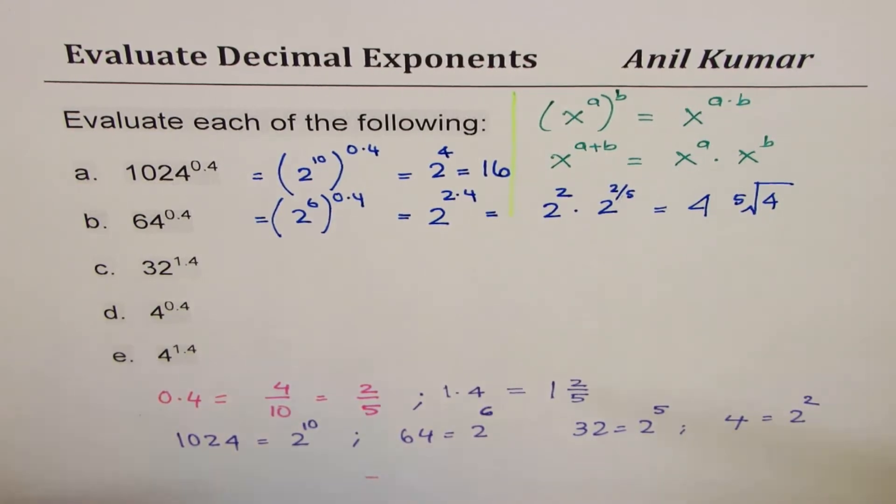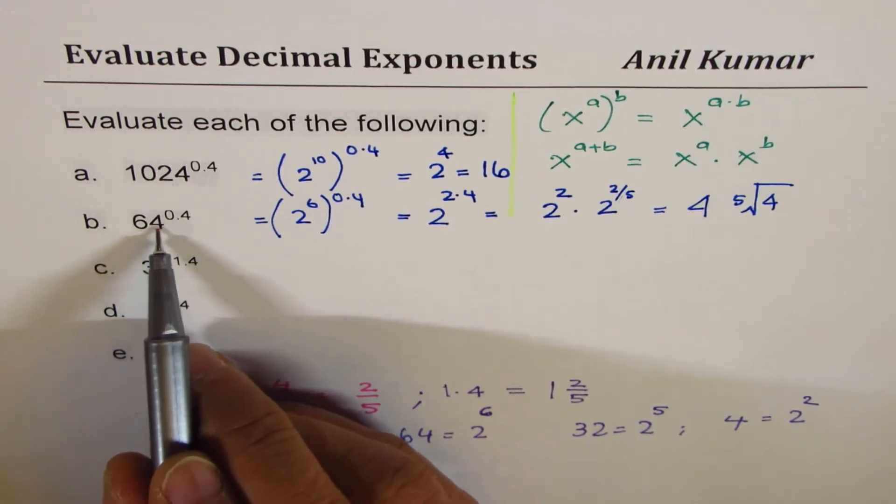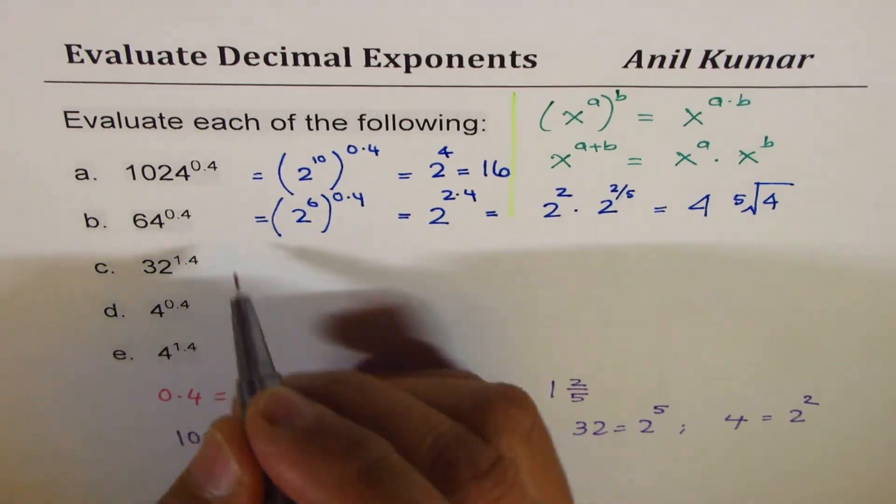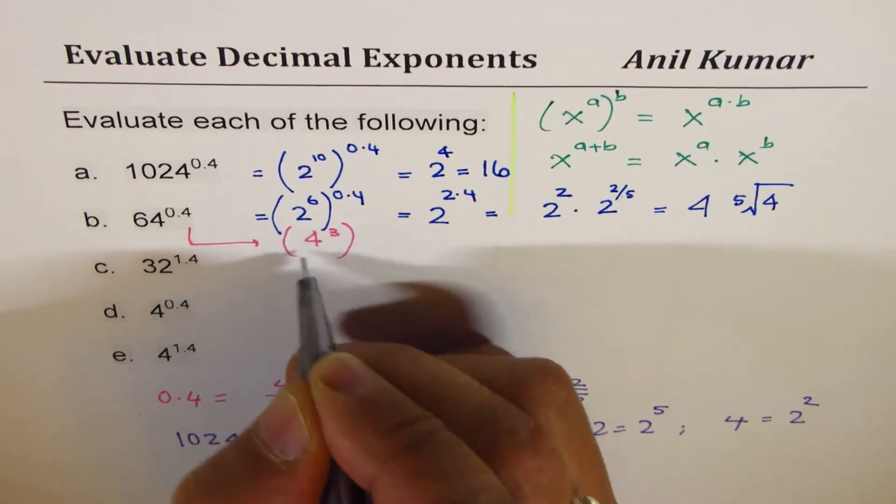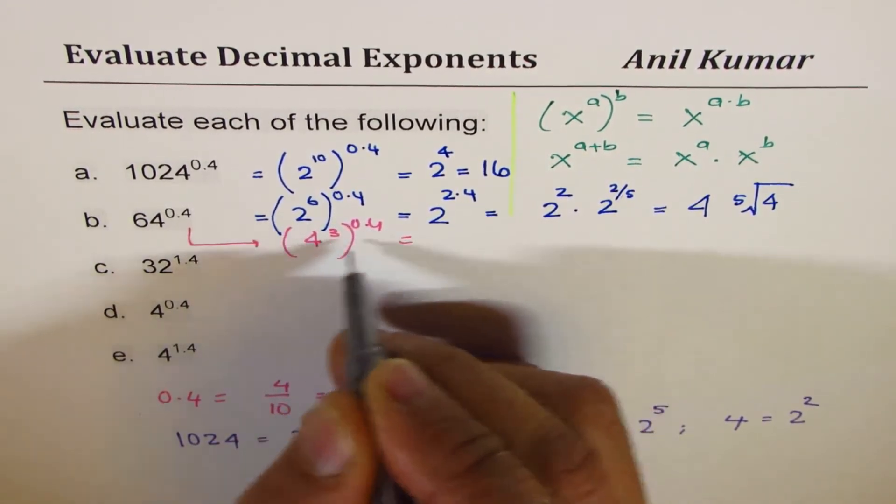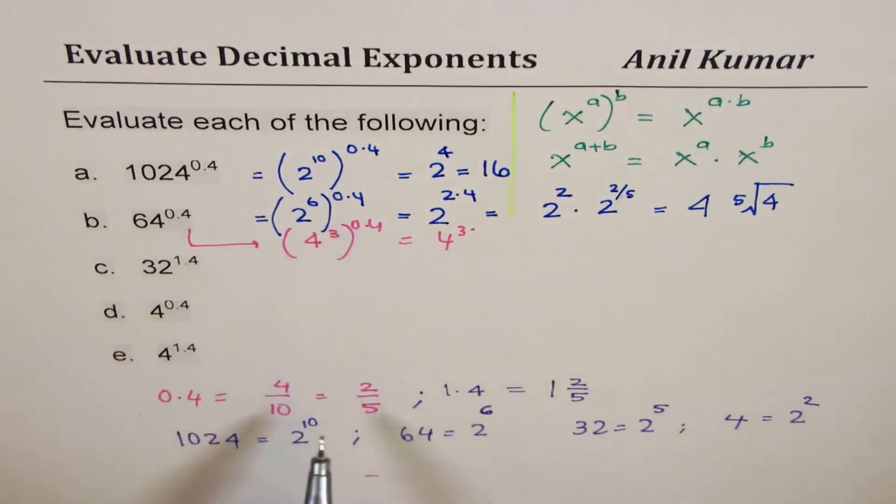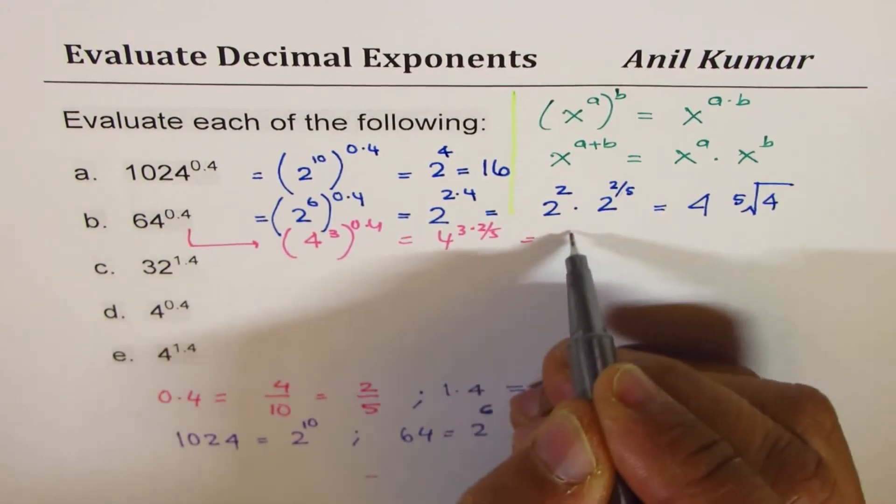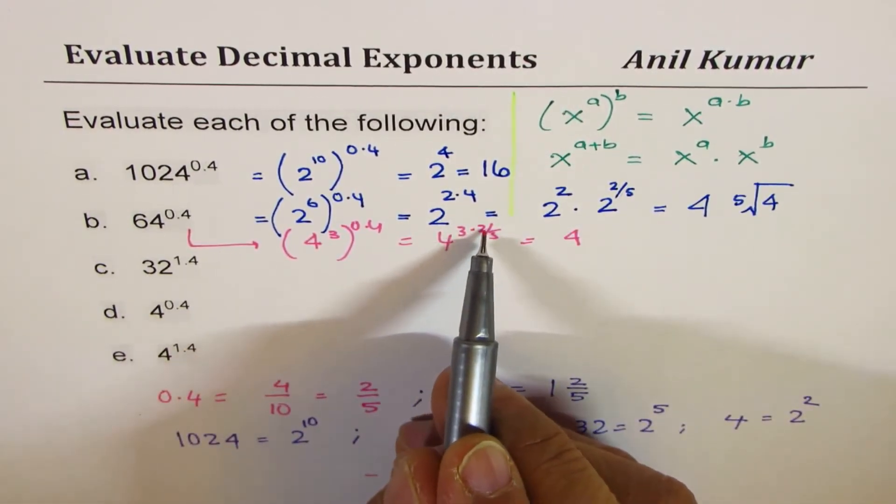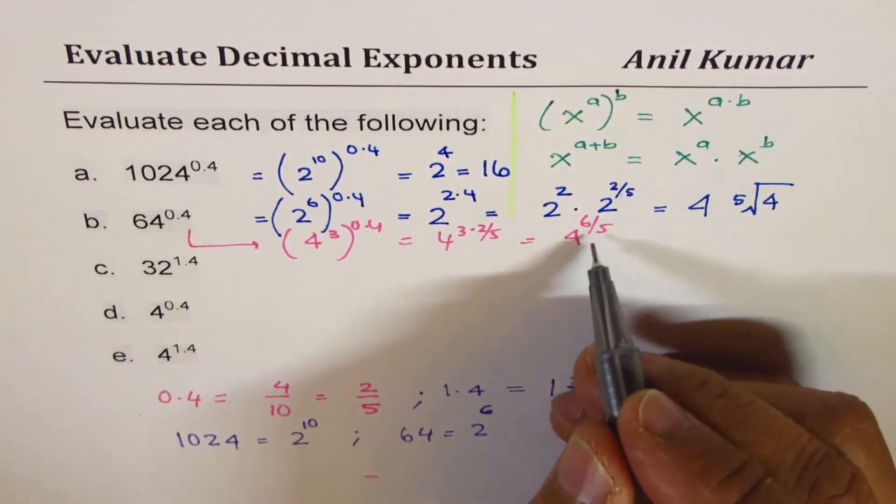There could be an alternate way of looking into it. 64 could be written as a power of 4 also, 4 cubed. So we could write this as 4 cubed, which is 64 to the power of 0.4. You could write this as 4 cubed times 0.4 could be written as 2 over 5. 2 over 5, which is 4, 3 times 2 is 6, 6 over 5. Do you see that? 6 over 5.